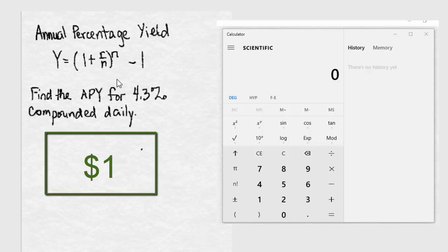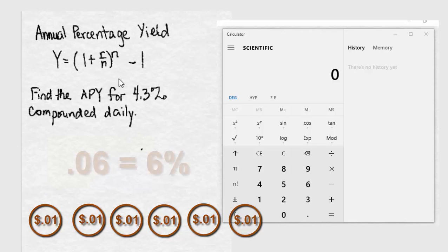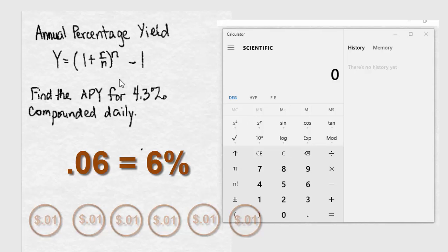For example, if you invested a dollar and at the end of the year you had a dollar and six cents in the account, then your annual percentage yield would be that six cents, or 6% of the original amount.